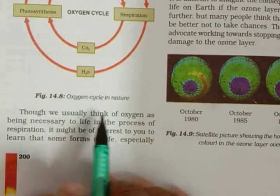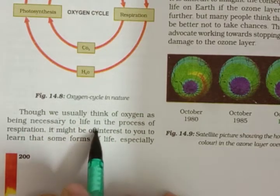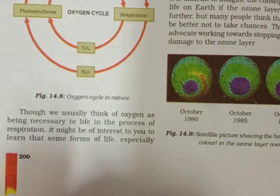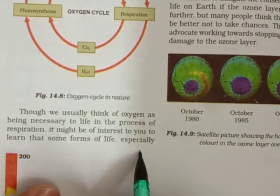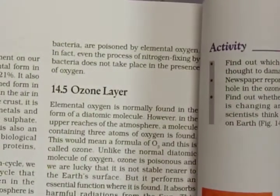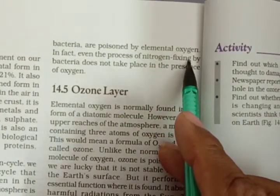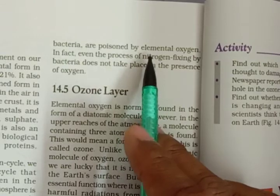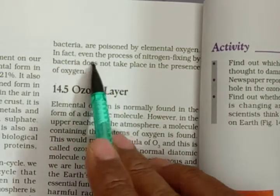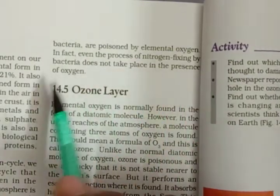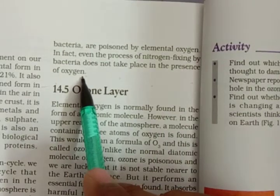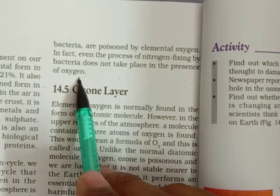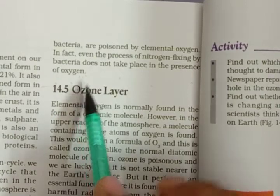Though we usually think of oxygen as being necessary to life in the process of respiration, it might be of interest to learn that some forms of life — especially bacteria — are poisoned by elemental oxygen. Most bacteria die when they come in contact with oxygen. Even the process of nitrogen fixing by bacteria does not take place in the presence of oxygen; if there is oxygen present, they can't fix the nitrogen.